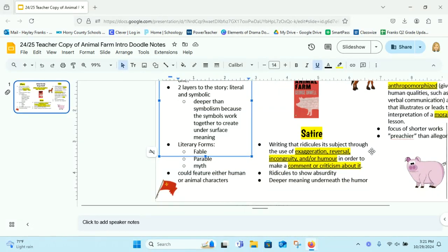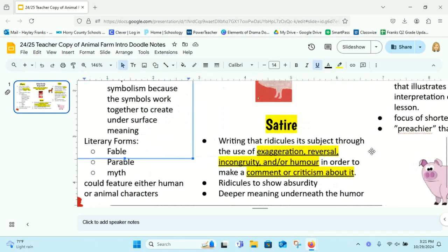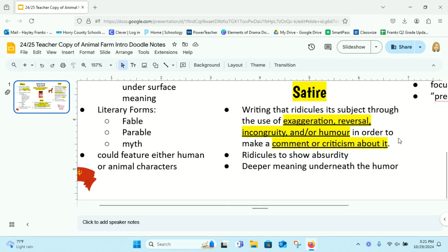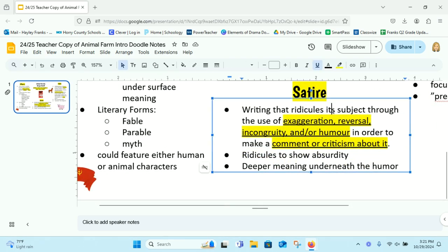So satire is writing that ridicules its subject through the use of exaggeration, reversal, incongruity, and/or humor in order to make a comment or a criticism about it. So it's kind of like sarcasm in a way.